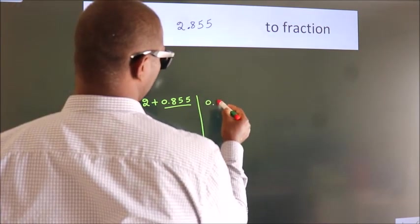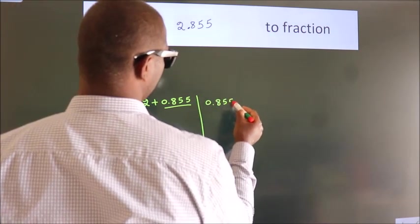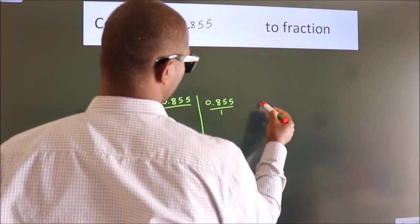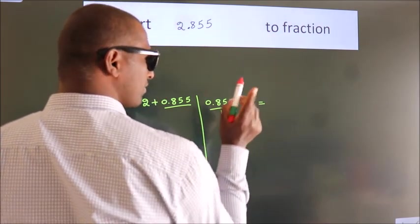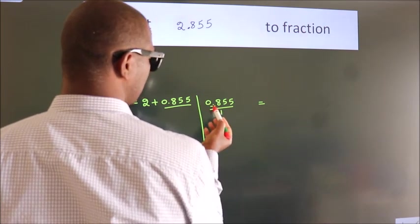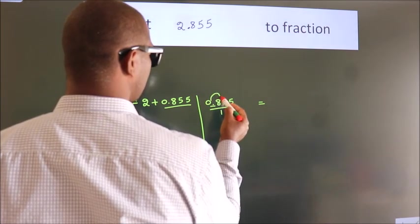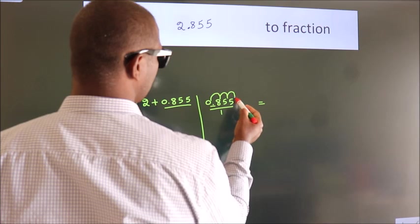So 0.855. To convert this to fraction, we have to move this decimal after 1, 2, 3 numbers.